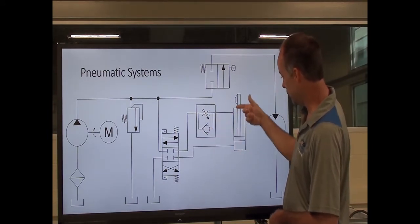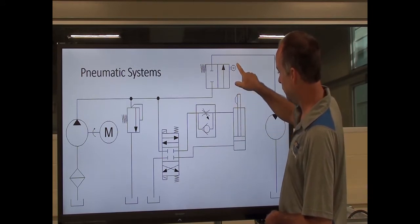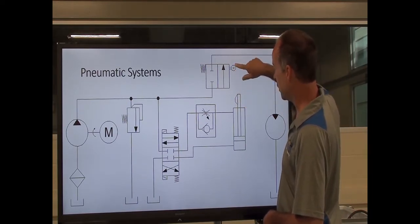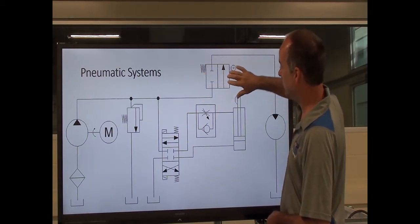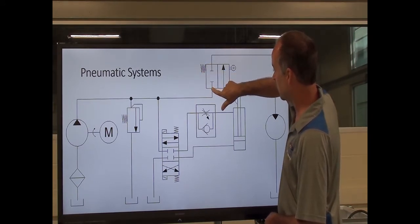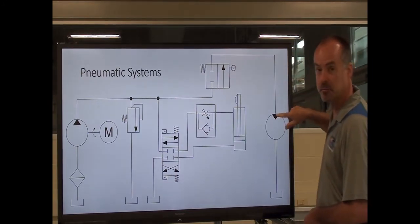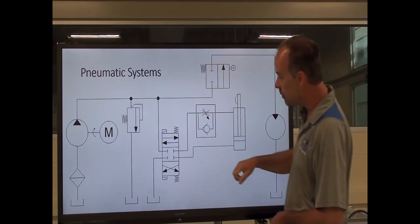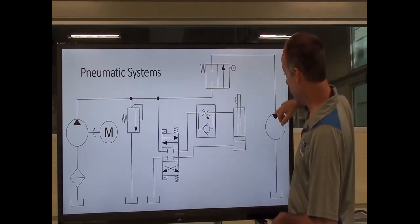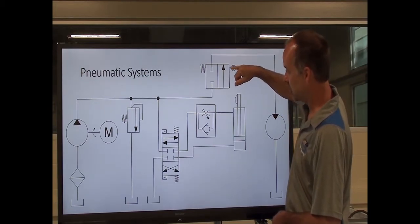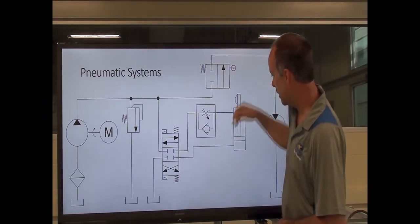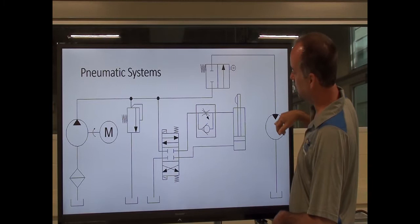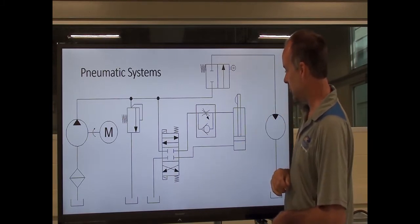This meter-out setup controls the extend speed, which is typically less than full speed. Once the cylinder extends all the way, there's a cam on the end of the cylinder rod that operates this cam operator. That shifts my two-way, two-position valve to allow fluid to flow from this port to this port, allowing my motor to run only when the cylinder is fully extended. The motor continues to run as long as the cylinder is extended and operating the cam valve. If we shift back and retract the cylinder, as soon as it comes off the cam valve, the valve shifts back, blocking the port and stopping the motor, allowing the cylinder to retract fully at full speed.